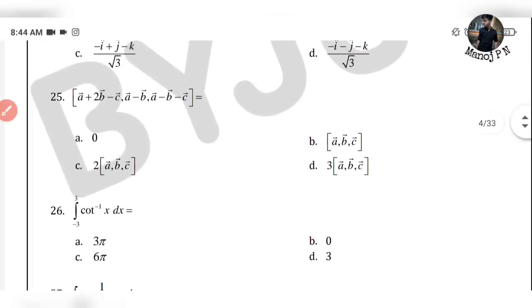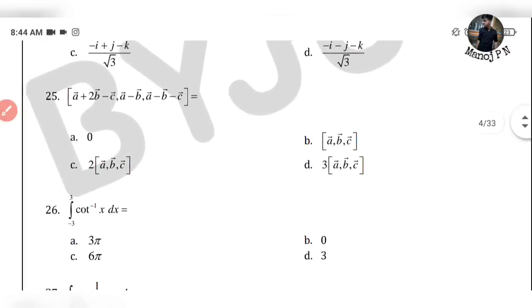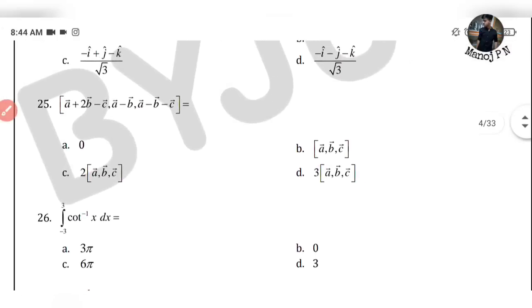Next question: a vector + 2b − c, a vector − b, and a vector − b vector − c. This is one of the easiest questions. Happy learning!